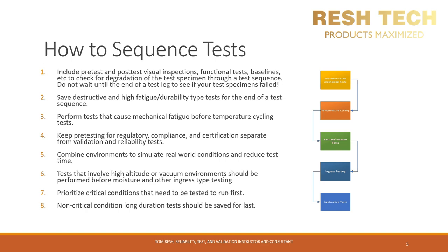The reason for item three is that you can learn a lot about your design based on the order you sequence tests, especially in the case of vibration and temperature cycling. In some scenarios, you can induce or bring to the surface mechanical fatigue failures by running a vibration test first, then temperature cycling after. For item five, you can reduce test time and create more realistic test conditions by combining different environments and mechanical stresses into a single test using combined environment test equipment. Items seven and eight emphasize the importance of learning quickly by placing critical items at the front end of your test sequence.